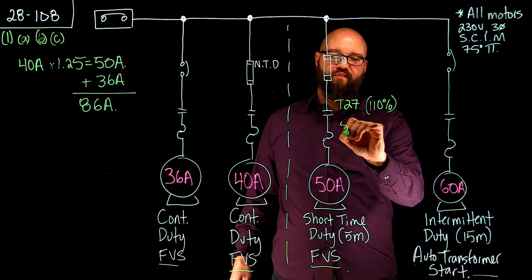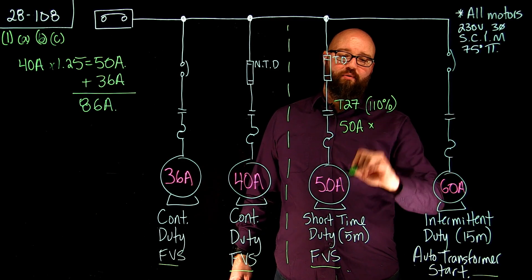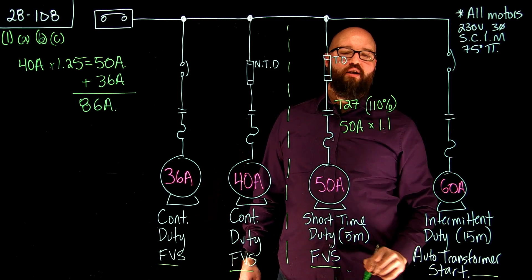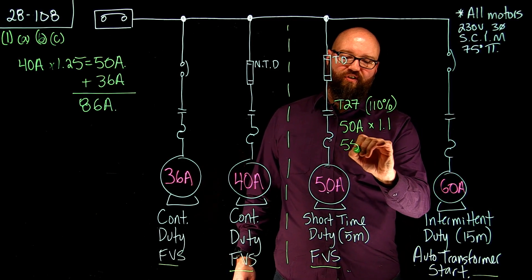So we're going to take the FLA, this 50 amp FLA, and we're going to multiply it by 1.1, which gives me 55 amps.